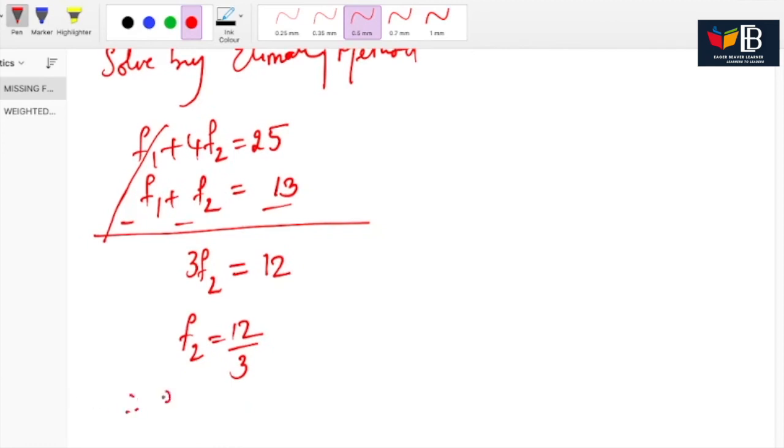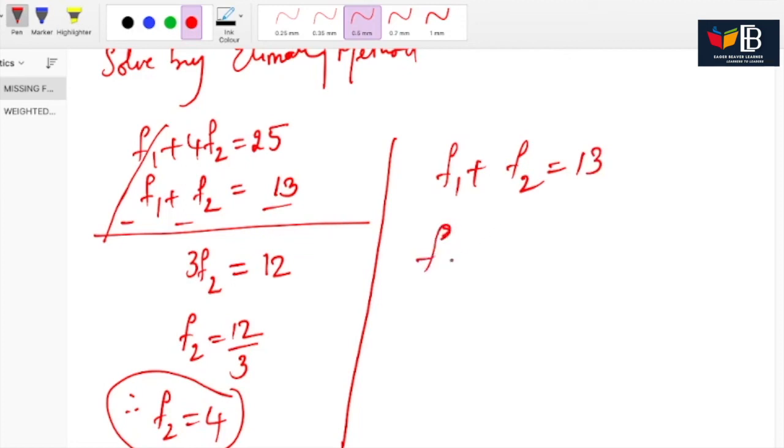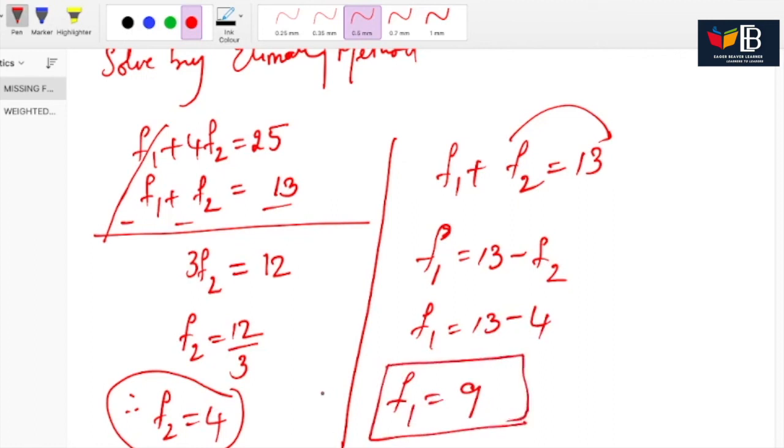Therefore F2 is equal to 4. Now substitute this F2 either in equation 1 or 2. I am using equation 1: F1 plus F2 equal to 13. We need to find F1. F1 equal to 13 minus F2. F1 is equal to 13 minus 4, so F1 equal to 9. Therefore our missing frequencies are 9 and 4.